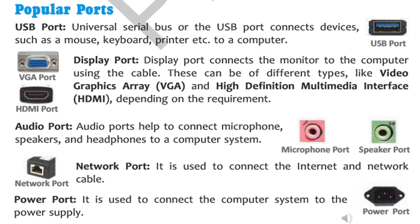The audio port is used for connecting a microphone or speaker with the computer system. The network port is used to connect an internet or network wire with the computer. The last one is the power port, which is used to connect the wire coming from the main supply to the computer.